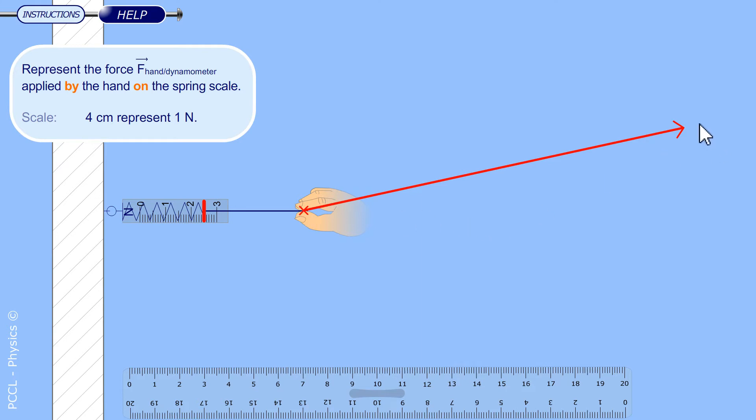Here the spring is horizontal. Its axis is horizontal therefore the force is horizontal. What about the direction now, it's given by the arrow. The hand pulls on the spring scale, to the right.